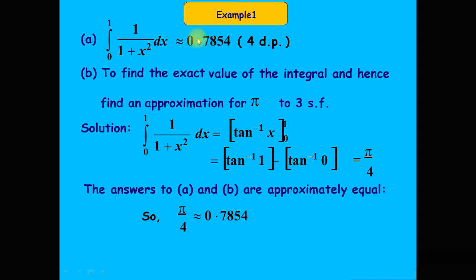The approximate answer from Simpson's rule is 0.7854 and the exact value is π/4. Since π/4 ≈ 0.7854 to four significant figures, the approximate result and the exact result are equal in this case. The answers to part a and part b are approximately equal.